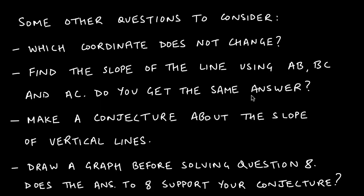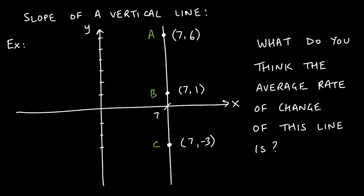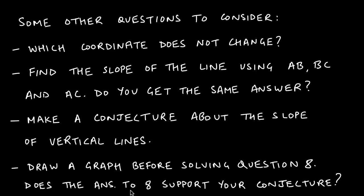Do you get the same answer in all three computations? Based on that, make a conjecture about what the slope of vertical lines is. Then move on to question eight in the packet — draw a graph of the points first; it should resemble a vertical line. Does the answer to question eight support your conjecture? Write down your answers to all four questions for both horizontal and vertical lines, put your name on it, and bring it to class.